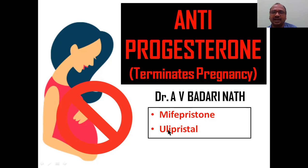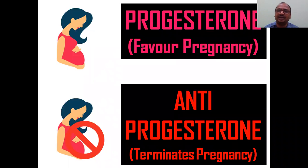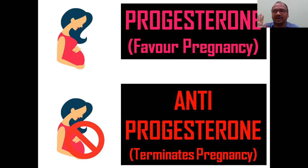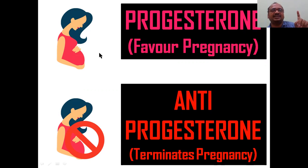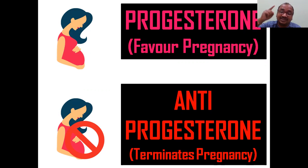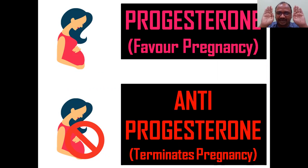The second drug is ulipristone - 'ulips' is a common word in the share market, meaning banning or termination. In my previous video I explained that progesterone favors the pregnancy. Anti-progesterone medicines work against progesterone and hence terminate the pregnancy - that is the very standard basic point you have to keep in your brain.